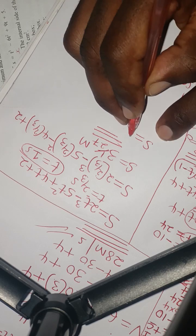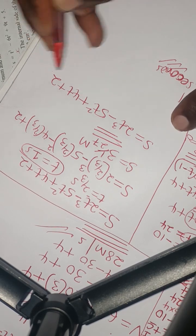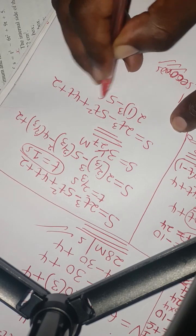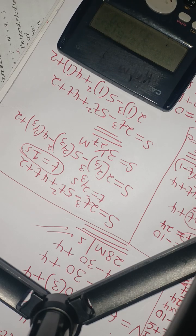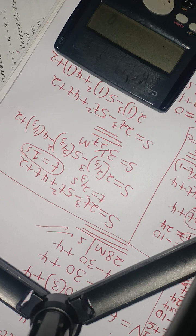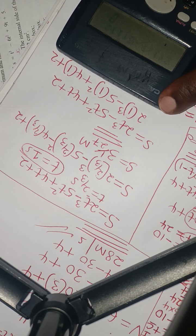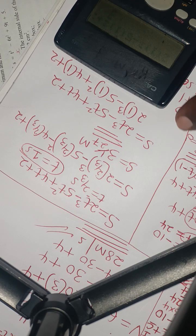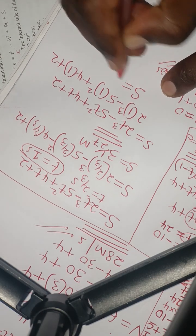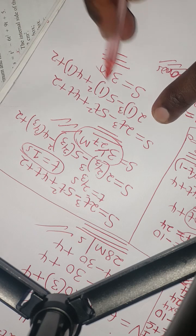For t = 1: s = 2(1)³ − 5(1)² + 4(1) + 2 = 2 − 5 + 4 + 2 = 3. So the displacement is s = 3 meters. When the particle is at rest, it had covered either 3 and 1/27 meters or 3 meters.